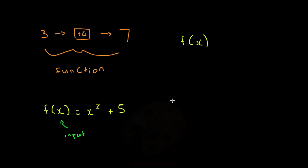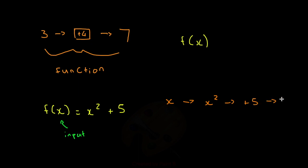Again, you could think of the function as taking the input, which is x, then performing the operation on it — which first squares it, so x squared, then adds a 5, so plus 5, and then gives us our output.